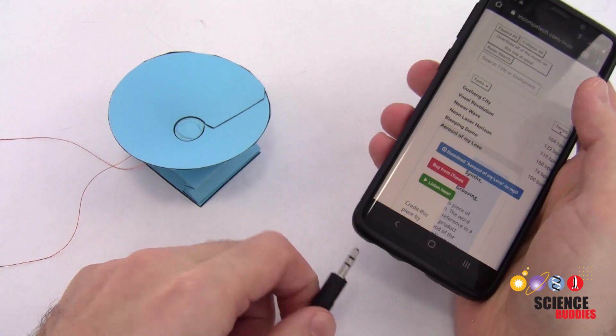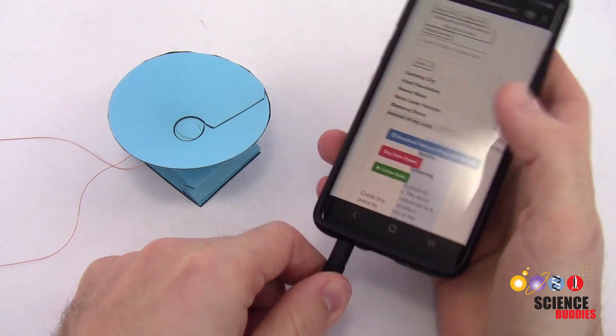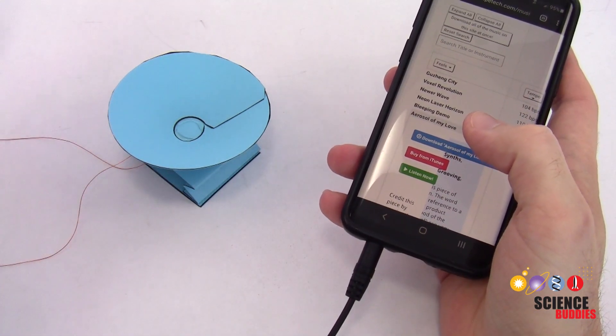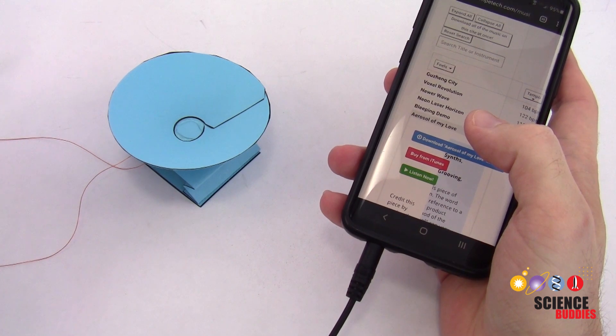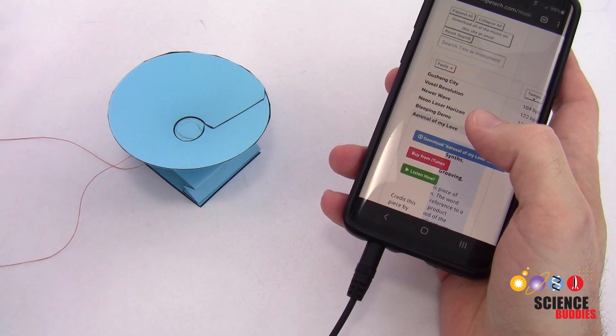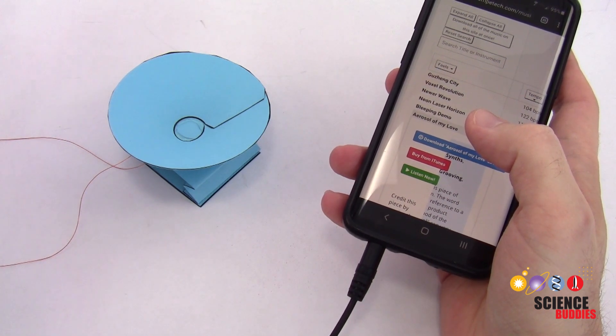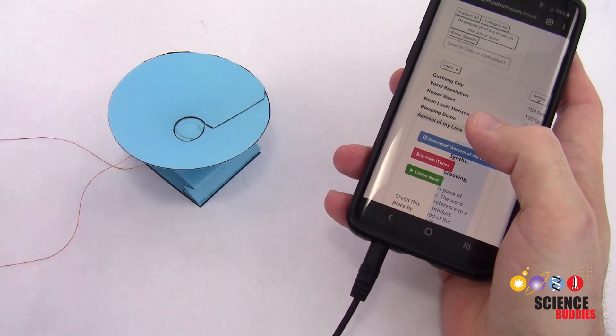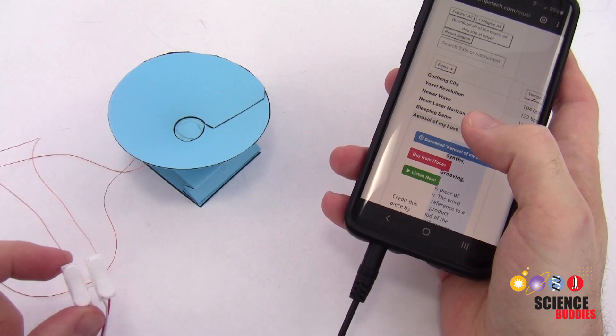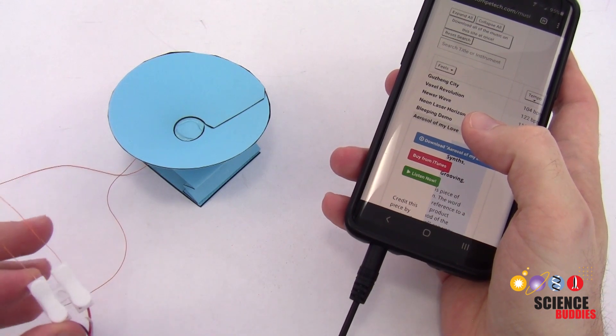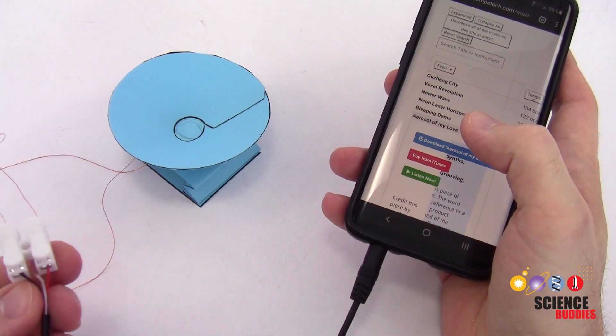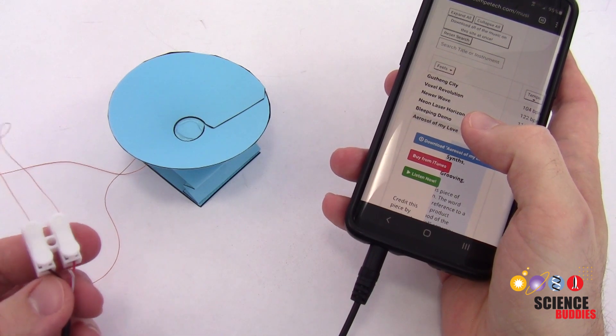So your final step is to take your headphone cable and plug it into your sound source. In this case, that's going to be my phone. And when you hit play, you should hear music coming from your speaker. Now it's not going to be as loud as your phone or computer speakers, but it should be loud enough that if you're sitting in a quiet room, you should be able to hear it even if you're sitting kind of halfway or across the room. If you don't hear any music, then again you really want to go back and double-check, especially those sanded connections on the magnet wire. That is usually the most common failure point.